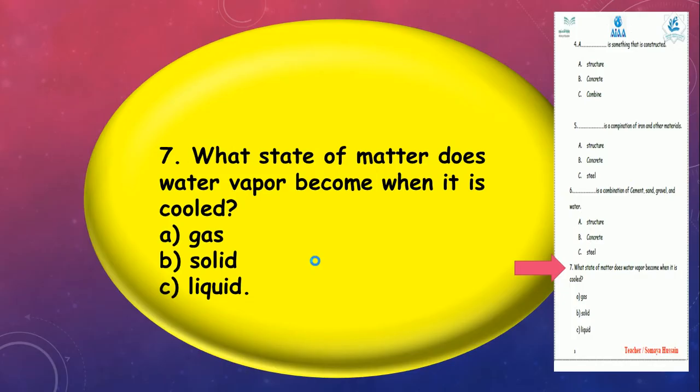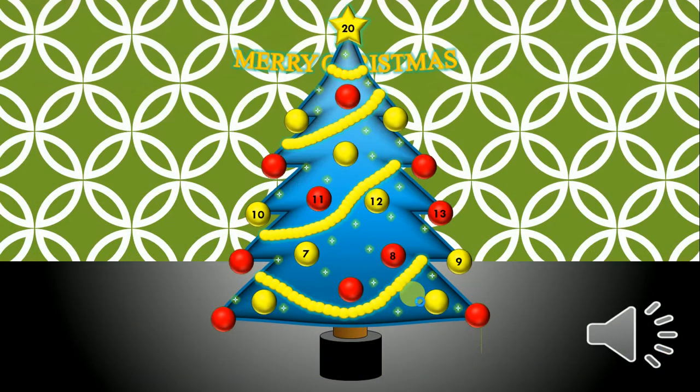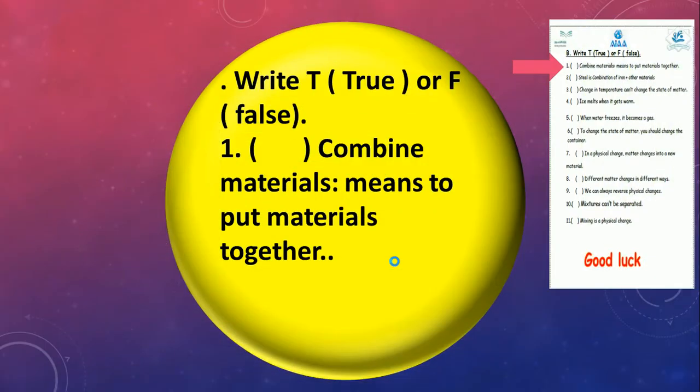Number 7: What state of matter does water vapor become when it's cooled? When I cool water vapor, it changes to water. So water is gas, solid, or liquid? Liquid, good job. Number 8, true or false, number 1: Combine materials means to put materials together to maybe build something, like when you make your own kite by combining materials. True or false? True, good job.